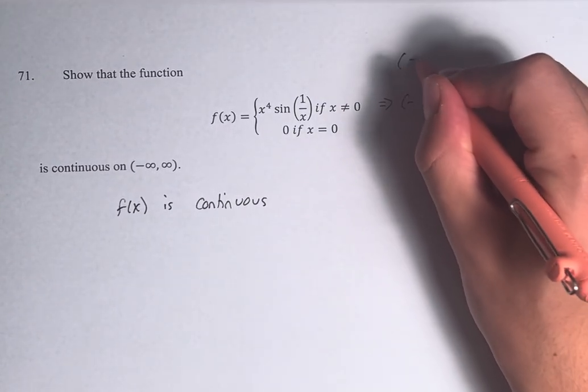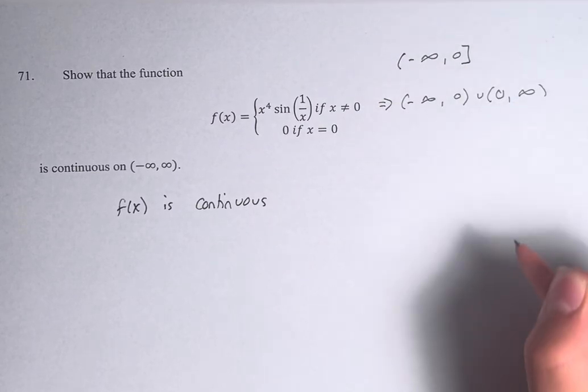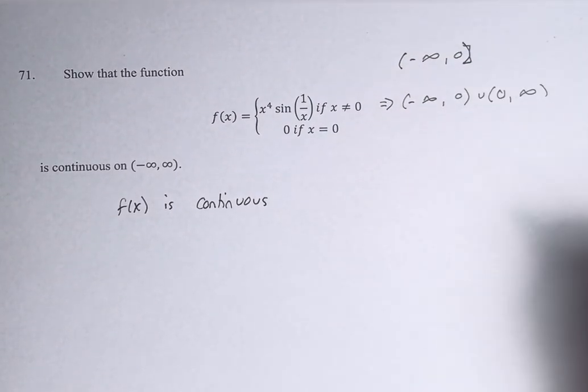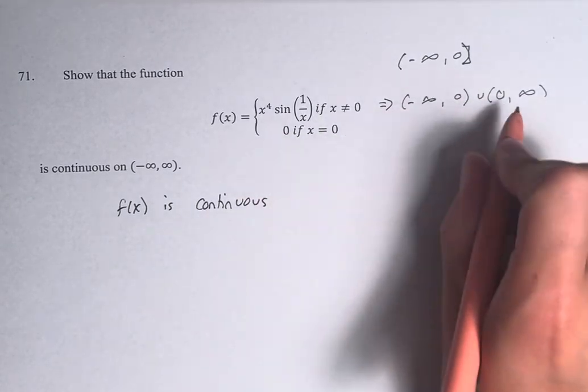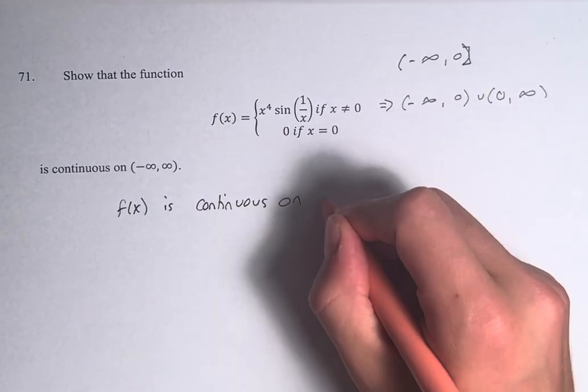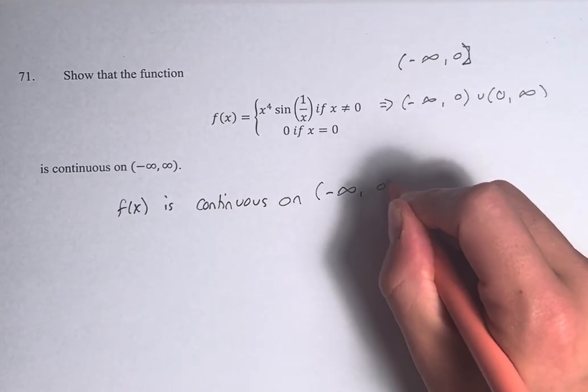So if we had negative infinity to 0 not inclusive, we'd have to turn this into a parenthesis from a bracket. But since it's not, we just leave it as is. So we know f is continuous on these two intervals.